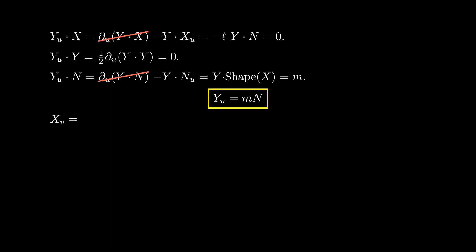Then we compute XV. XV equals SUV, which is the derivative of BY with respect to U, which by the product rule equals VUY plus VYU. By our previous computations, this equals VUY plus BMN.